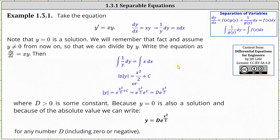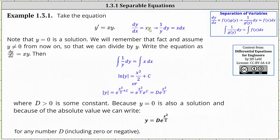Let's solve y prime equals x times y using separation of variables. To begin, notice that y equals zero is a solution. We will remember that fact and assume y doesn't equal zero for now so that we can divide by y or multiply both sides by one over y. We begin by writing the differential equation as dy dx equals x times y, and we want the y parts on the left and the x parts on the right. Multiplying both sides by one divided by y and writing in differential form gives us one divided by y dy equals x dx.